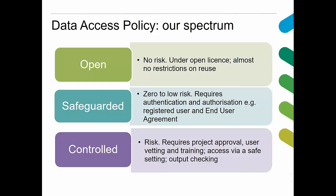Safeguarded access can include extra conditions depending on the data owner's wishes. The final controlled category covers data with a real risk of disclosing personal information. It requires project approval, user vetting and training, access via a safe haven, and output checking. The safeguarded category can also include additional conditions placed upon data depending on the nature of the data owner.